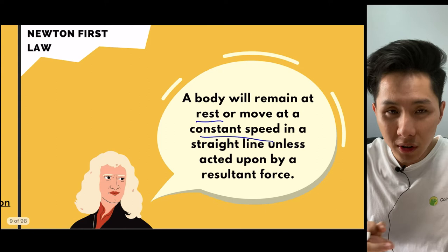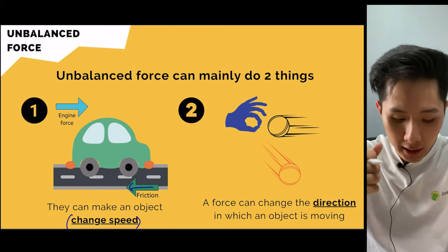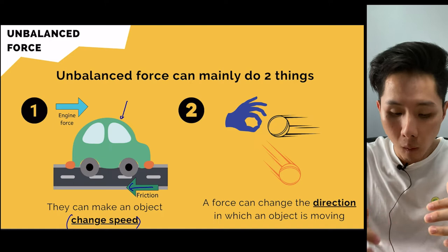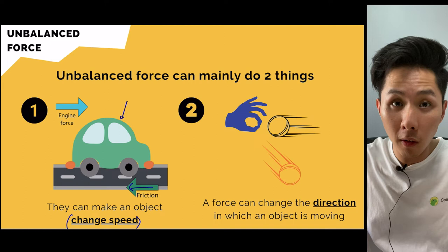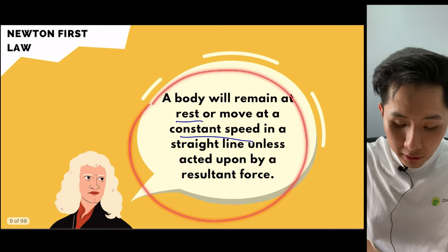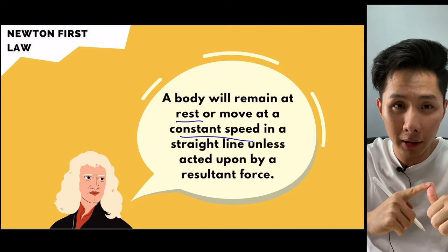If there is no force, if forces are balanced, an object will always maintain constant speed. The same applies to a ball — if there's no external force, no friction, it will just keep moving in the same direction forever. When there's no resultant force, it won't change direction and won't change speed.